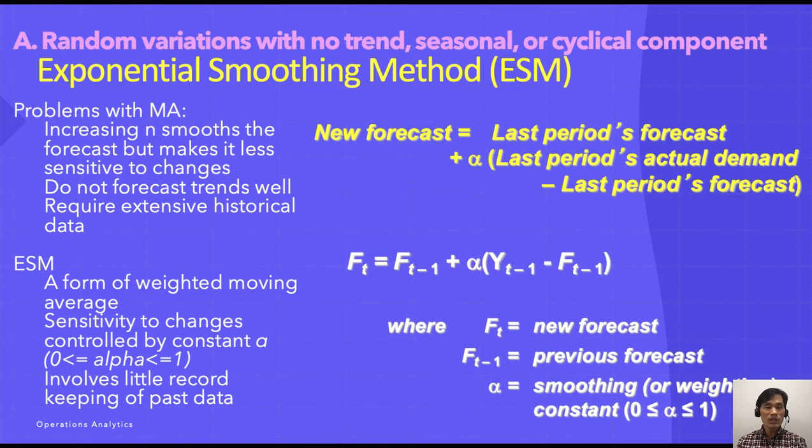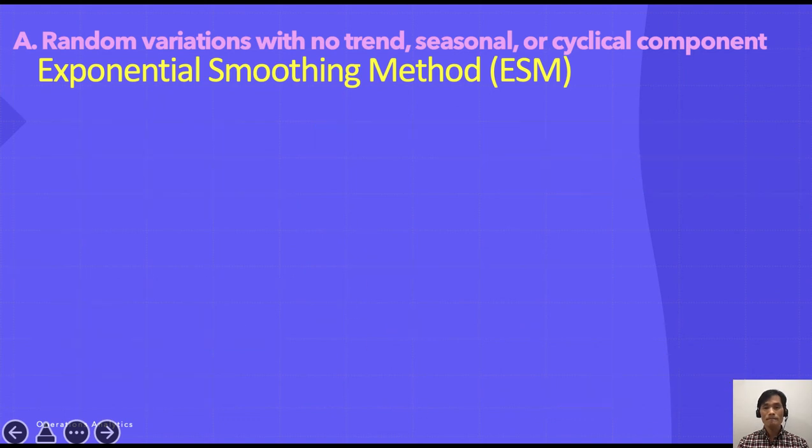The formula is F_t equals F_{t-1} plus alpha times (A_{t-1} minus F_{t-1}). So new forecast equals last period's forecast plus the constant alpha times, in parenthesis, last period's actual demand minus F_{t-1}, that's last period's forecast, and that gives you your forecast.